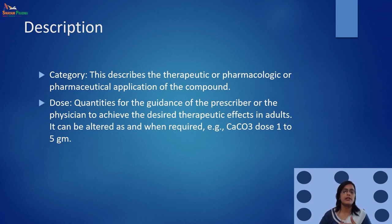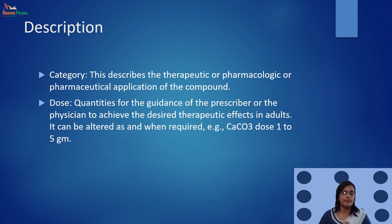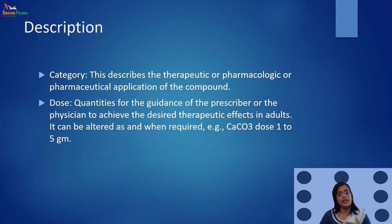Next is category, which describes the therapeutic, pharmacological, or pharmaceutical application of the compound — generally, which category of drug it is. Then there is dose — quantities given for the guidance of the prescriber or physician to achieve the desired therapeutic effect in adults.